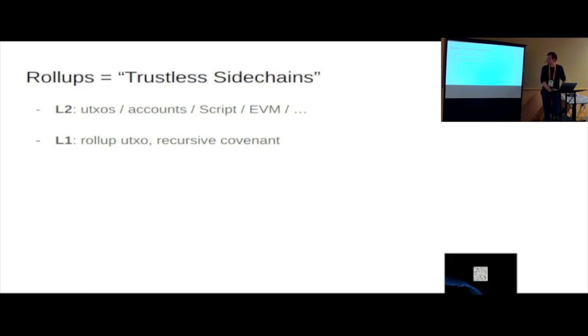And this is a recursive covenant. So whenever you interact, whenever you spend the rollup UTXO, you have to recreate it for almost all spend paths. You can peg in, you can peg out. So you can enter and leave the system. And importantly, this is why it's trustless. Each layer two block is verified by layer one, by the use of zero knowledge proofs. So layer one verifies that the state transitions of layer two are valid. I'll talk about this in a bit more detail soon.